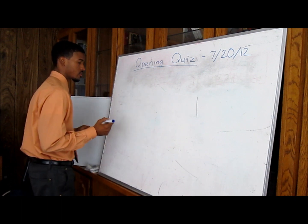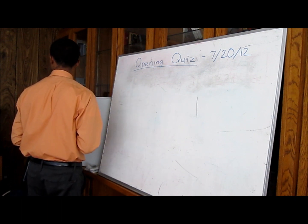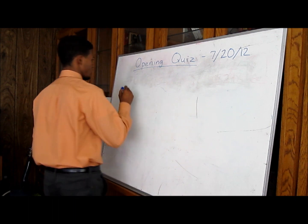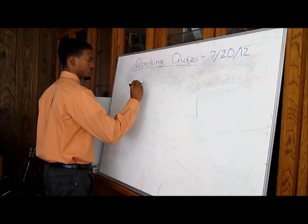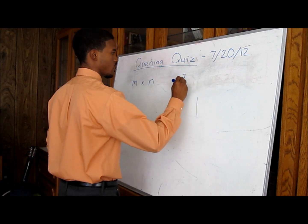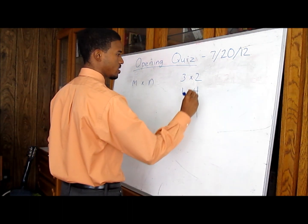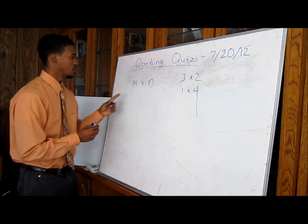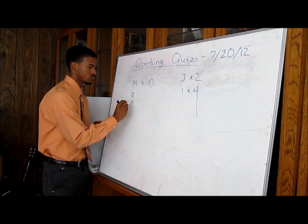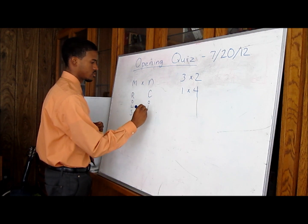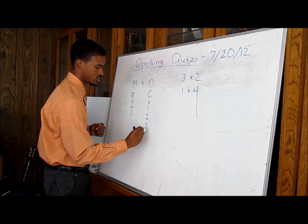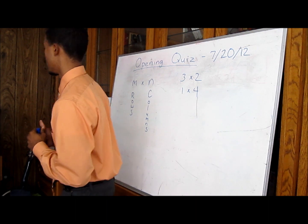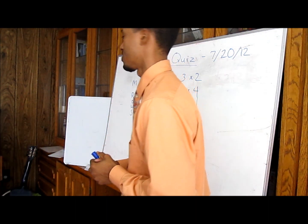Looking at number one — it states: when given a matrix with dimensions m by n, what do the m and n represent? If we think about last class period, we had m by n. You may see it in the form of a 3 by 2, or a 1 by 4. The m is going to represent your rows, and n is going to represent your columns. Very important that you remember this, because it will come in handy once we start matrix multiplication in just a few minutes.